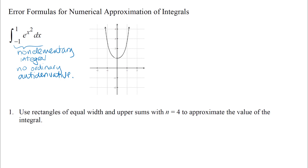From negative one to one, we've got a picture of the function. This graph shows y equals e to the x squared, and we're integrating from negative one to one. That function is always positive on this interval, so the integral represents the true area between the function and the x-axis. Just by counting the grid squares — those are all one-by-one squares — you can estimate about two full squares plus some pieces, so roughly three-ish. It's good to have that ballpark so our numerical answers don't seem crazy.